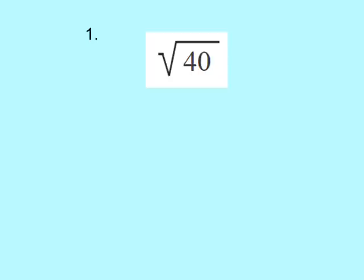It's going to give us what we call an irrational number. It's going to give us a long decimal number that doesn't repeat, doesn't terminate, and goes on forever. Kind of like pi. So what we're going to do is just estimate it. So we're going to look at 40 and think about two squares that 40 falls between.